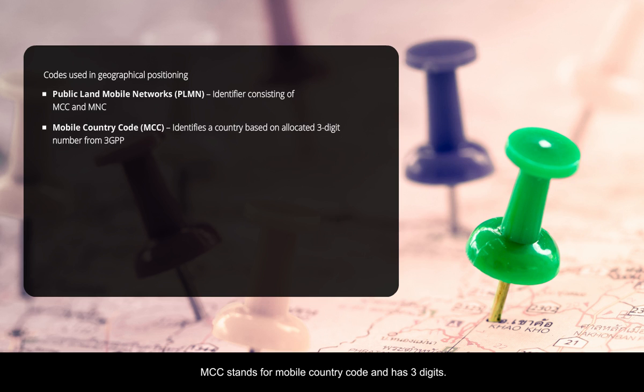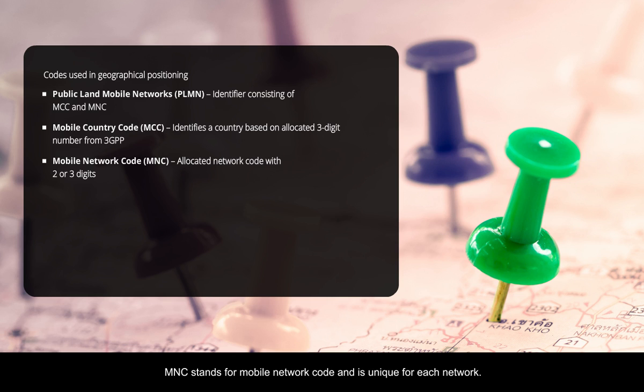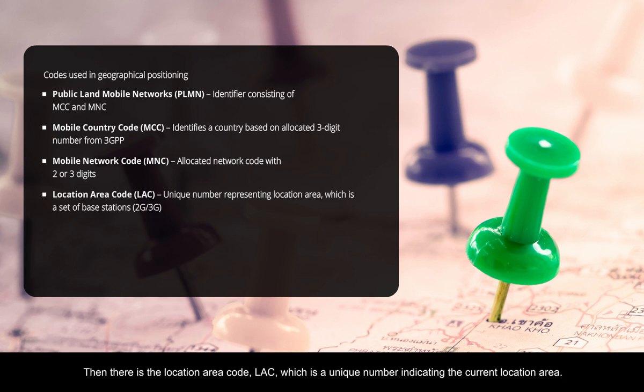MCC stands for Mobile Country Code and has three digits. This number is allocated by 3GPP. MNC stands for Mobile Network Code and is unique for each network. Each network code can be two or three digits.